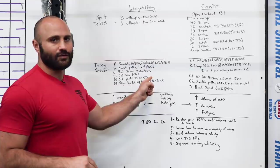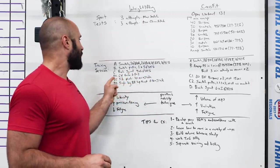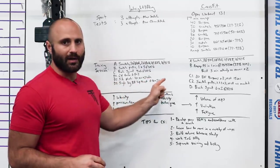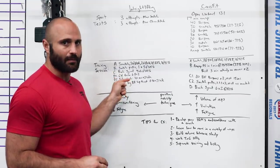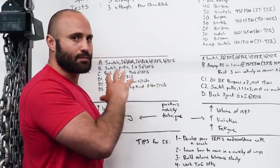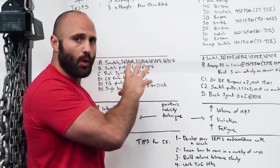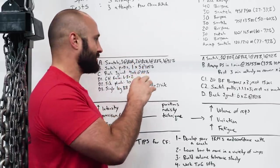You would do one set of GH raises, which would be a hamstring accessory exercise, one set of side planks on both sides, one set of single leg barbell hip thrusts. Then you go back and do another set of each. So total contraction volume in a session like this is pretty low. Rest time is to full recovery. You're always worried about being as fresh as possible for each one of the lifts.